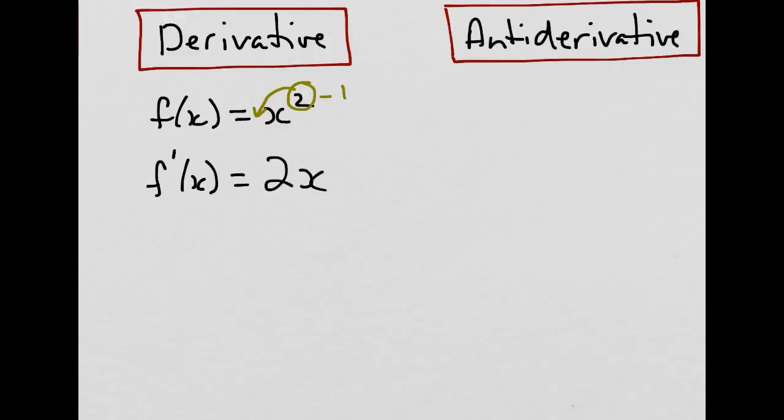So, if we had the same function, f of x equals x squared, and wanted to find the antiderivative of this function, we'd do the exact opposite. We would add 1 to the exponent first, then divide by this value, and this would leave us with x cubed divided by 3, which becomes the antiderivative of x squared.